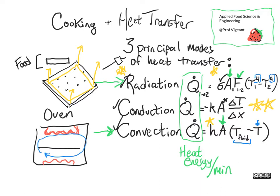That's also true with radiation, but because we're taking the temperature of the heating element to the fourth power, that number is so big relative to everything else that it pretty much swamps the change. With convection, the difference is much more noticeable.